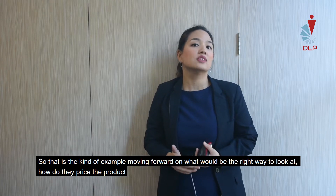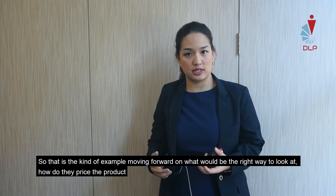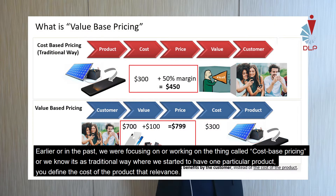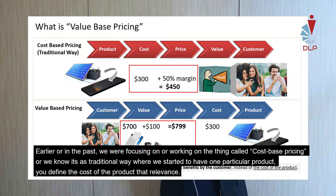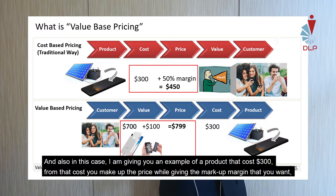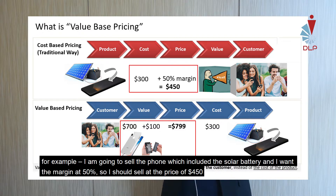Moving forward, let's think about the right way to price a product. In the past, we were very much focused on cost-based pricing, known as the traditional way. You start with one particular product, define the cost of delivering that product — in this example, a cost of 300 US dollars.